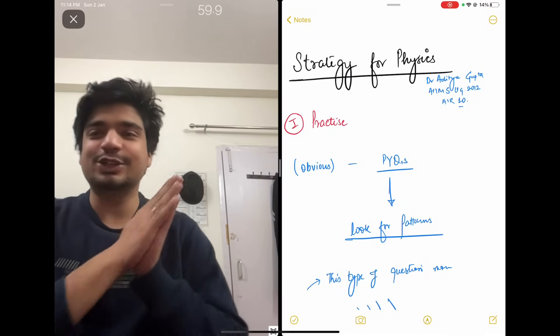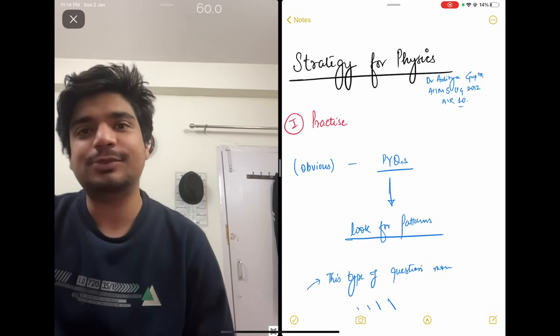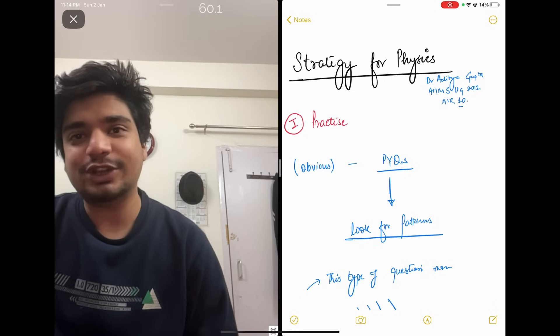Hello everyone, my name is Dr. Aditya Gupta. I did my undergraduate from AIIMS New Delhi, securing All India rank 10 in AIIMS UG exam 2012, and I am currently pursuing my DM in Pediatric Oncology again from AIIMS Delhi.